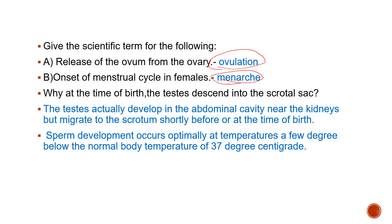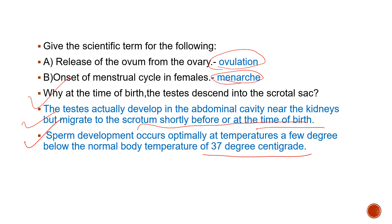Why do the testes descend into the scrotal sac at the time of birth? The testes actually develop in the abdominal cavity near the kidneys, but they migrate to the scrotum shortly before or at the time of birth. This is because sperm development occurs optimally at temperatures a few degrees below body temperature. If the testes remain within the body, sperm development will not happen — so the testes must be outside the body, just below the normal body temperature of 37 degrees centigrade.